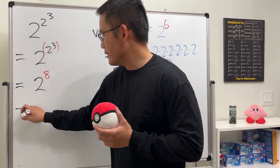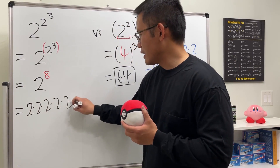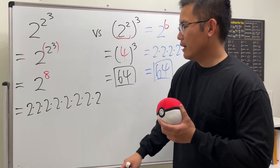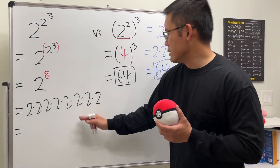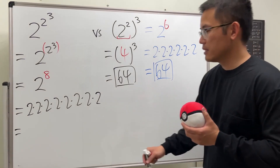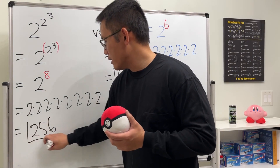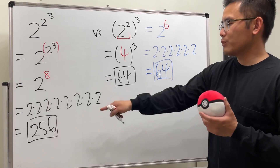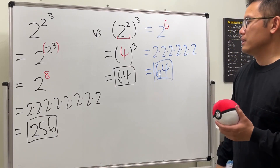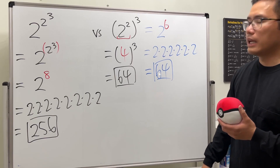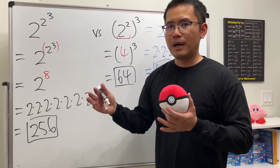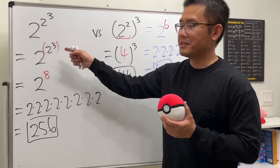So without parentheses we have 2 to the 8th power: 2 multiplied 8 times. Up to 2^6 is 64, times 2 is 128, times 2 again is 256. So without parentheses the answer is 256, which is much bigger than 64. Be really careful with repeated power expressions without parentheses.